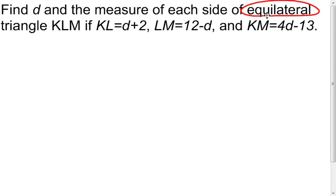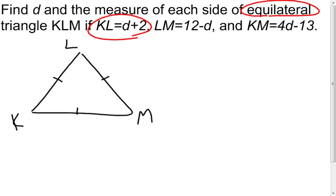And then it gives us the length of all three sides. What I'd like to do for starters is I would just like to draw my triangle. I know it's equilateral so I'm going to mark that it's equilateral. I have triangle KLM and then I'm going to put in these three lengths. The length of segment KL is going to be d+2. Length of segment LM, that's 12-d. And finally the length of segment KM is 4d-13.